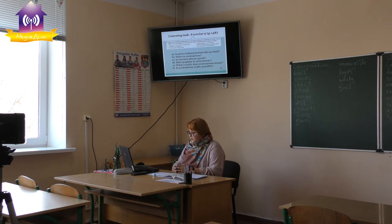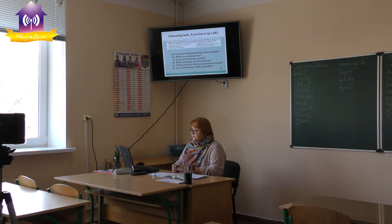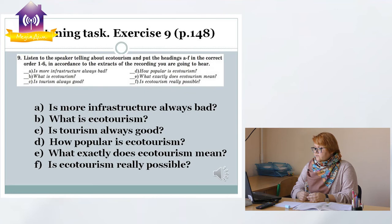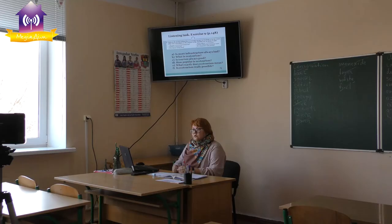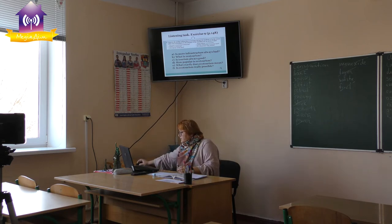This story is built very logically and is well structured, so you can guess the order even without listening. But we'll listen for the second time. The sentences you need to put in order are: A) Is more infrastructure always bad? B) What is ecotourism? C) Is tourism always good? D) How popular is ecotourism? E) What exactly does ecotourism mean? F) Is ecotourism really possible? Let's listen again and now make your choice — put the right numbers.